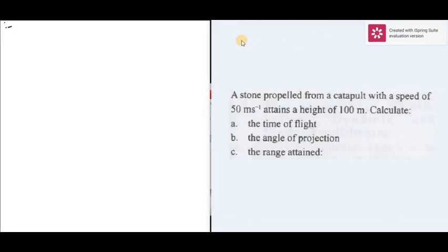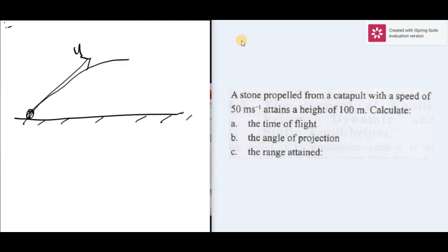The situation to this question can be represented as follows. Consider this is the horizontal ground. You have the stone at this point projected with initial velocity u. The trajectory of the projectile will fall back to the ground. From the point of projection down to this point will be the range.